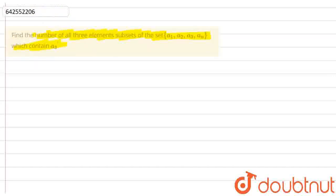We have to make a subset of all three elements. So we have to make a three element subset, and it is given that A3 is fixed.